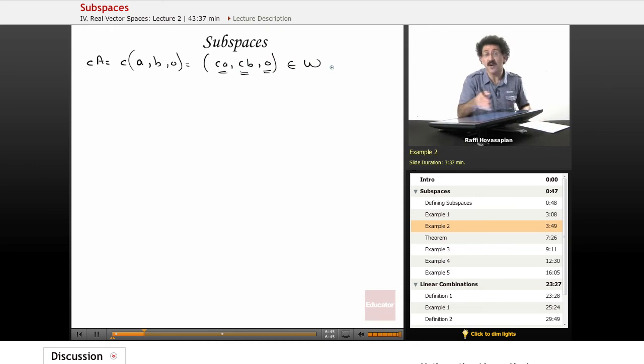So yes, we can certainly verify all of the other properties. It's not a problem. As it turns out, this is a subspace, so W is a subspace of V.